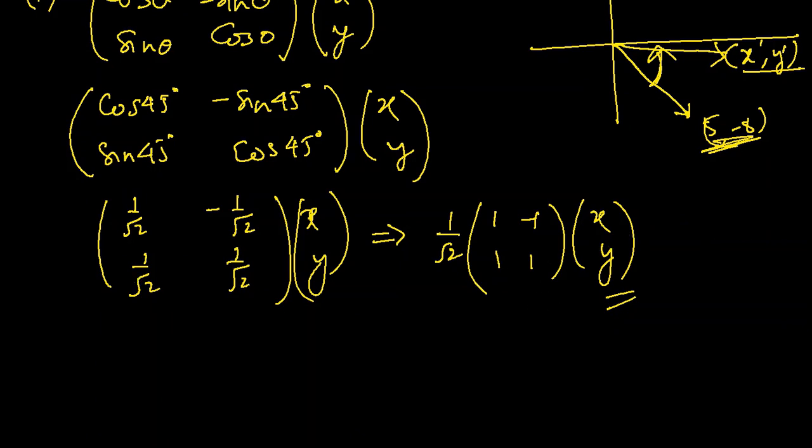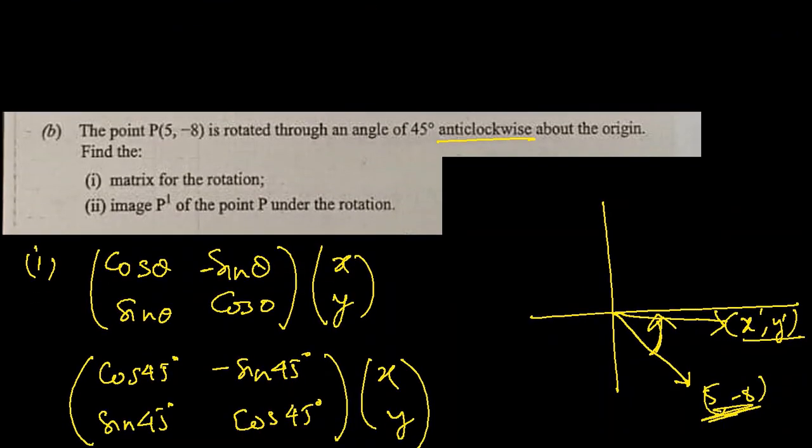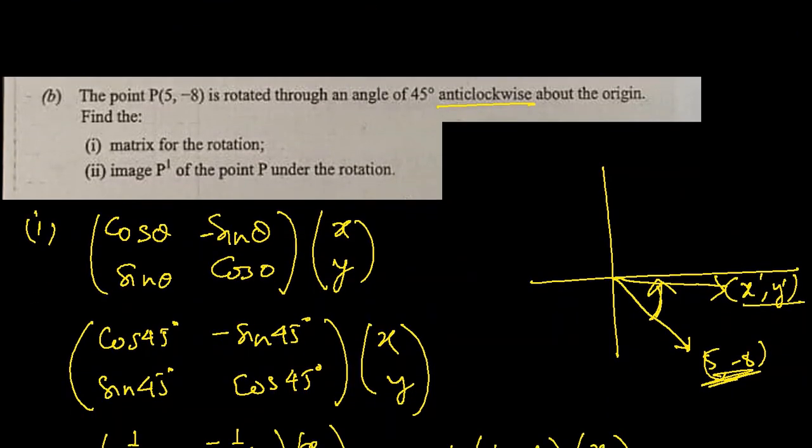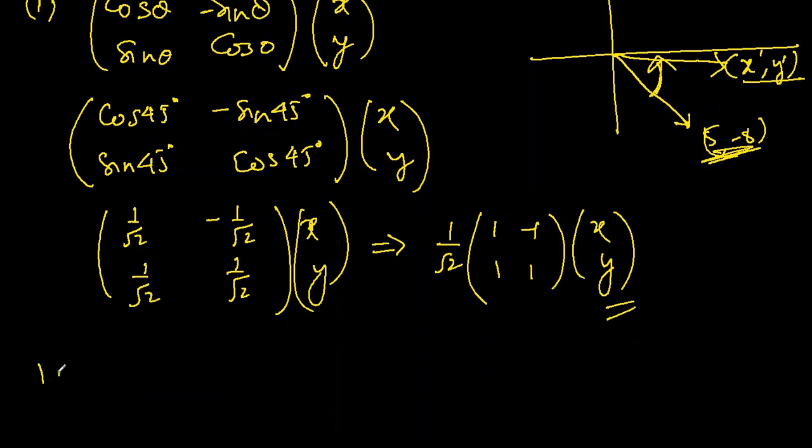Next, p prime, or the point p under the rotation. Now we'll write the point p which is (5, -8) in place of x, y, and that's how we'll get the rotation for this point. We already have 1 over square root 2, matrix 1, minus 1, 1, 1, and we will put (5, -8) in place of x, y.